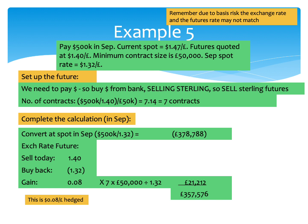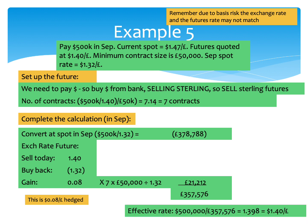If you work out what effective rate that's given us — we had a $500,000 payment in September and the cost was £357,576 — that gives us, near as damn it, $1.40, which is the futures price we were after. We were trying to fix it at $1.40 in the first place. You may not be precise due to basis risk — we should have had 7.14 contracts but only went for 7 — so there will be a couple of flexible areas meaning you won't get a perfect hedge most of the time, but it will get you almost there.